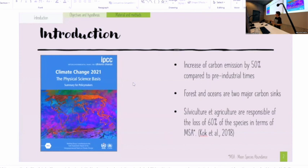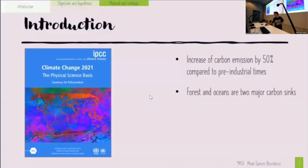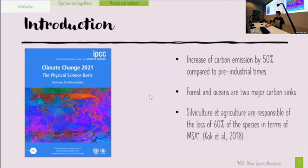Bad timing for the IPCC. We have an increase of carbon emissions by 50 percent compared to pre-industrial times, and forests and oceans are two major carbon sinks. I will focus on forests and leave oceans for other ecologists.